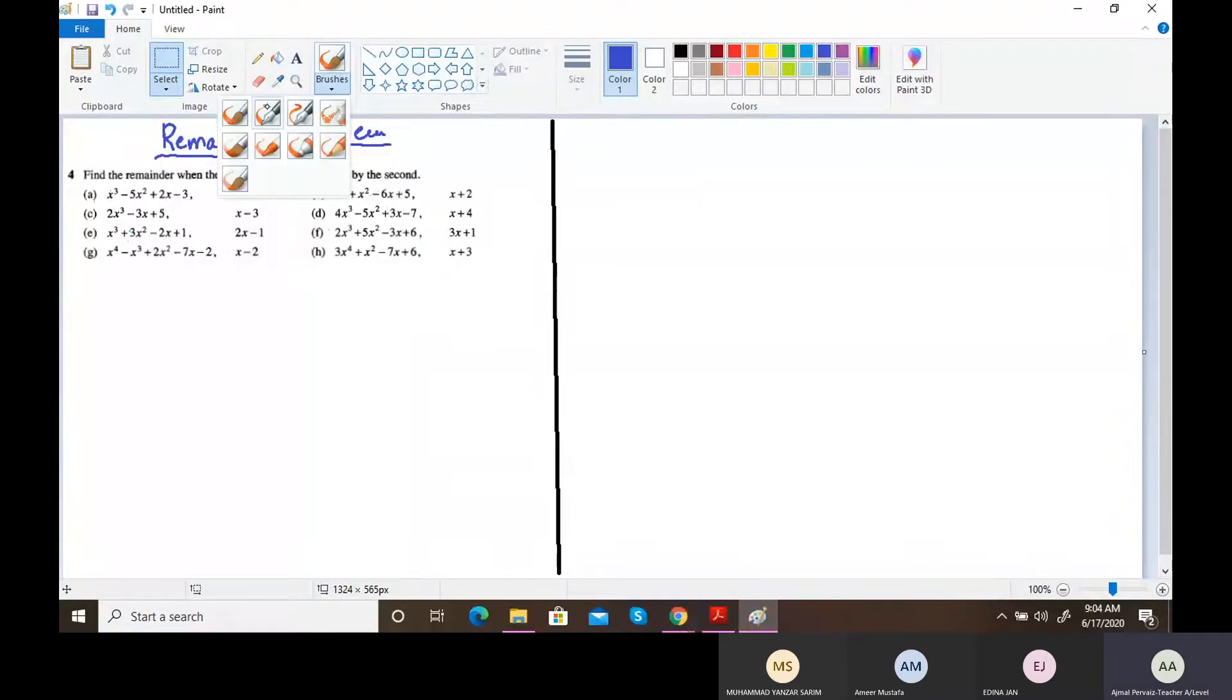Find the remainder when the first polynomial is divided by the second polynomial. So, the first polynomial will be written in the form of f(x) = x³ - 5x² + 2x - 3.